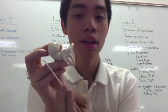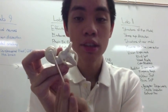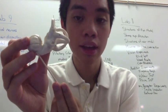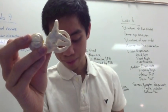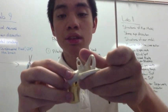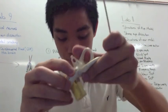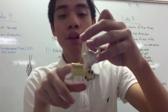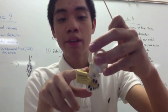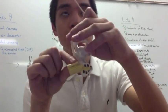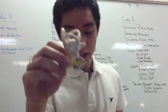Next you have your cochlea, which is this little spiral snail-shaped thing right here, and this deals with hearing. You also have your round window, which is this little hole right there. And you have your vestibulocochlear nerve, which connects your vestibule and your cochlea together. So that's your ear model.